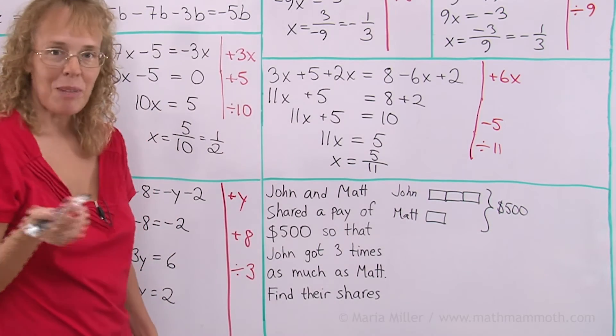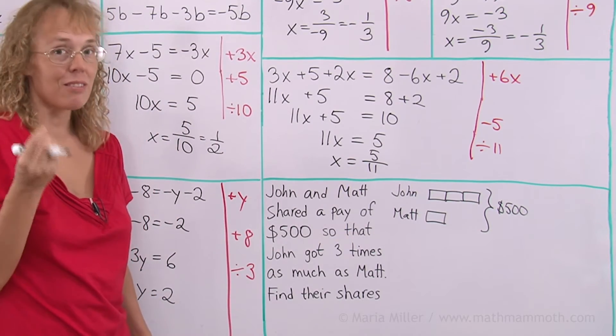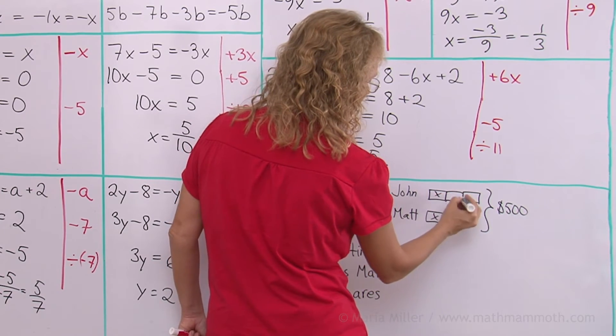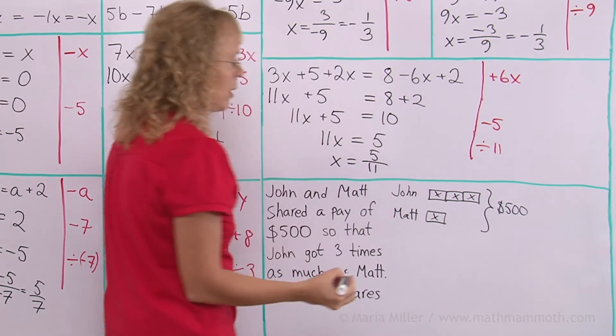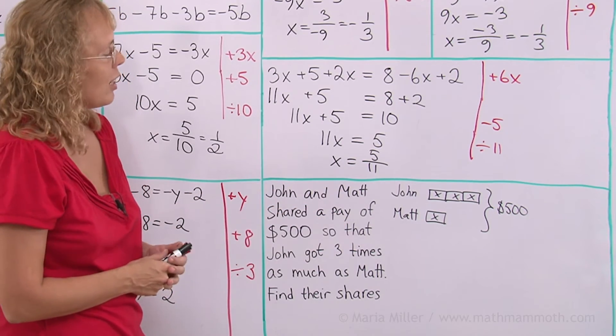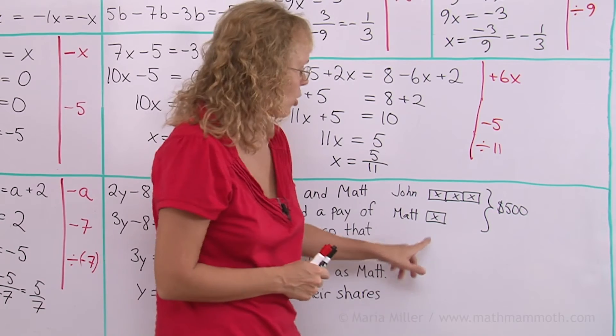And in total all of this is 500. Now my block here is my unknown that I will use when writing an equation. I will call this x. And I'm sure you can solve this now without writing an equation after you see this, but let's write the equation too.